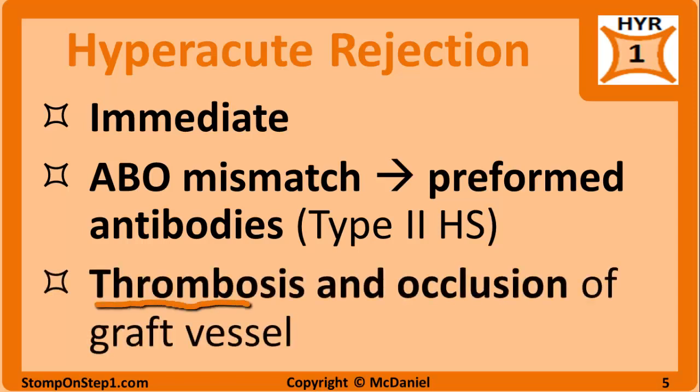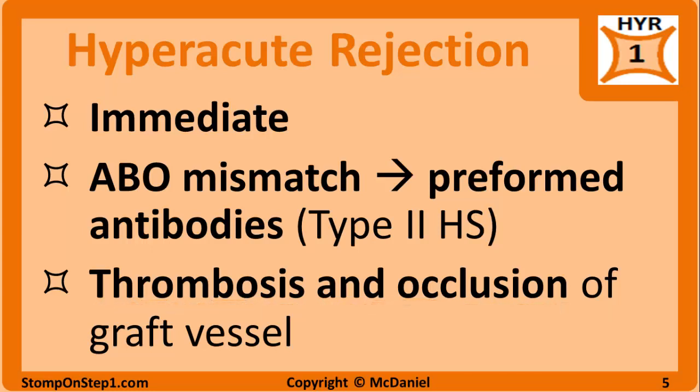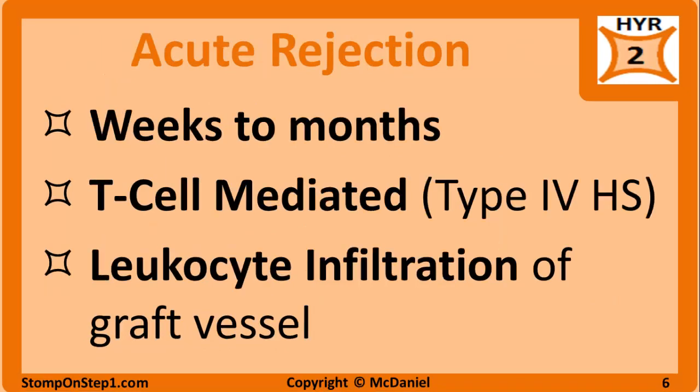Hyperacute rejection results in thrombosis and occlusion of the graft vessel, which is often visible while still in surgery. The organ will have pale areas of ischemia as well as bleeding and thrombosis — noticeable just by looking at it. When this happens, the transplanted organ must be removed immediately.